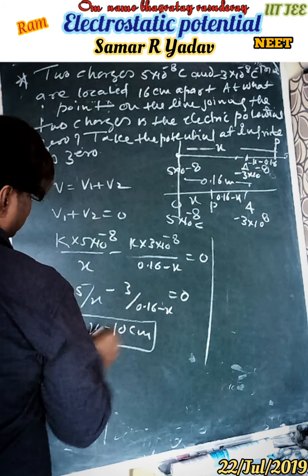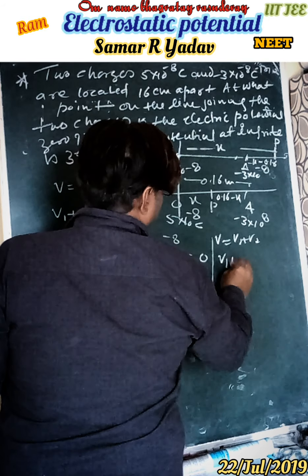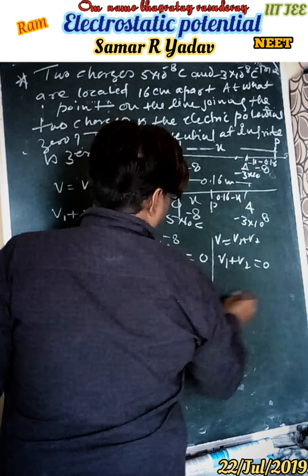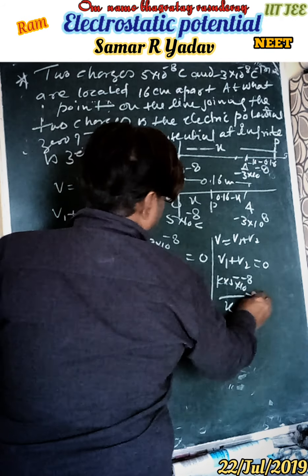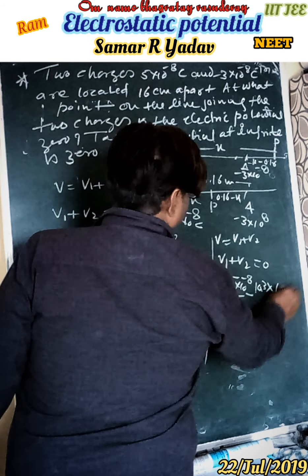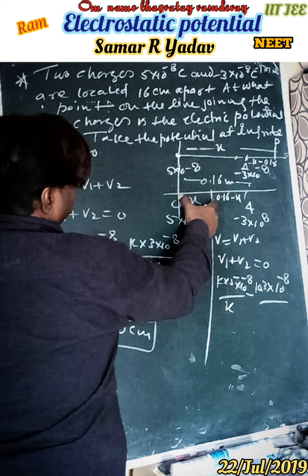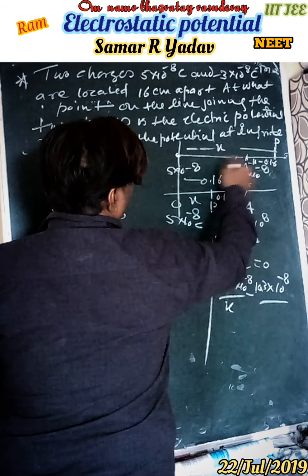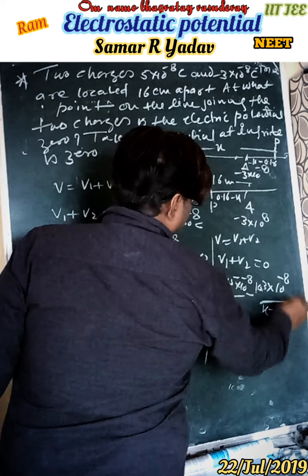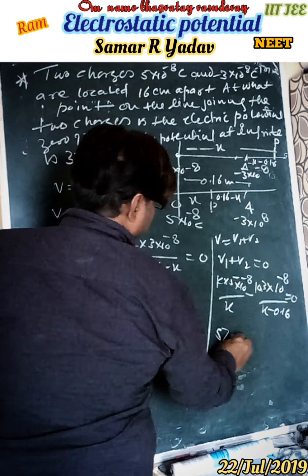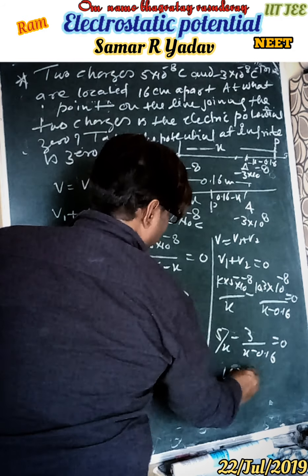Again, V equals V1 plus V2, therefore V1 plus V2 equals zero. So: K times 5 times 10 to the power minus 8 upon x, minus K times 3 times 10 to the power minus 8 upon (x minus 0.16) equals zero. This simplifies to 5 upon x minus 3 upon (x minus 0.16) equals zero, giving x equals 40 cm.